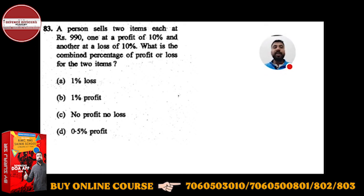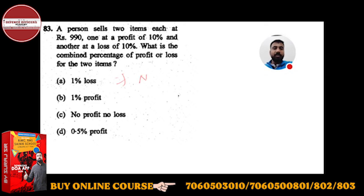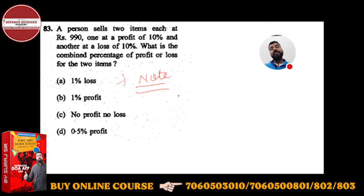I think you have seen my video. Whenever the selling price of two articles is given the same and their rate of profit and loss is also given the same, in that case there will always be a loss. I'll note this for students. We can solve it too, but I will not solve it here. You should watch my previous videos on profit and loss.